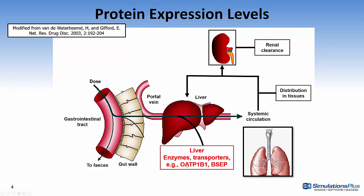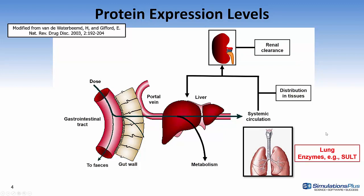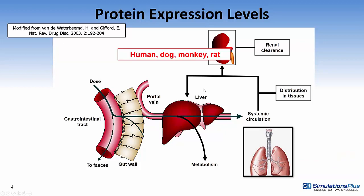There are also enzymes in the liver and transporters, such as OATP1B1, which will transport compounds from the bloodstream into the liver. And BSEP, which transports compounds that are in the liver into the canalicular. We also have them defined in the kidney — enzymes such as sulfotransferase and transporters such as OCT2. And then we can also define them in the lungs; enzymes such as sulfotransferase are defined in the lungs in GastroPlus 9.6. These are defined for human, dog, monkey, and rat.